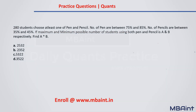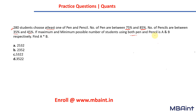Welcome back. Let's look into a good question on optimization. 280 students chose at least one of pen and pencils. The number of pen choosers is between 75% and 85%, and the number of pencil choosers is between 35% and 45%. If the maximum and minimum possible number of students choosing both pen and pencil is A and B respectively, then find the product of A and B.